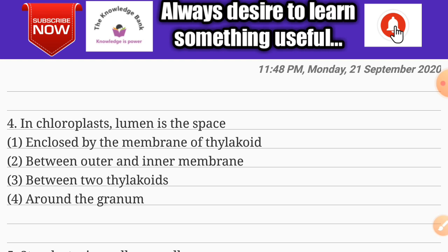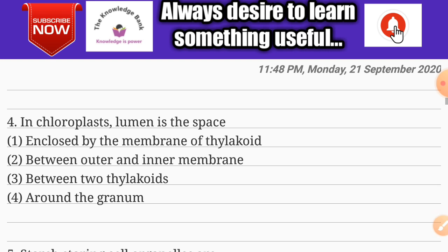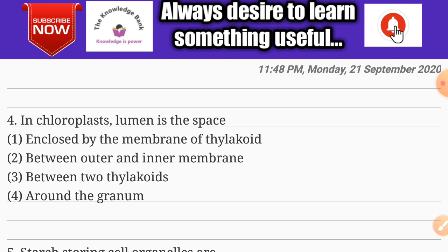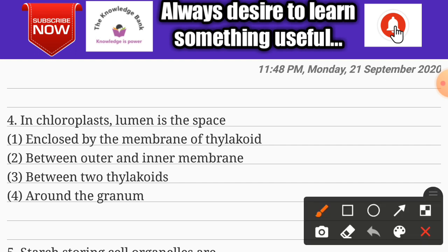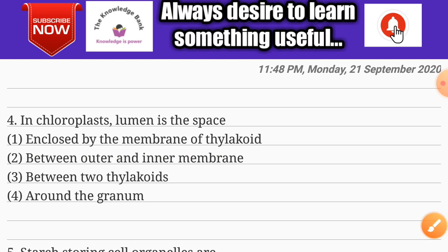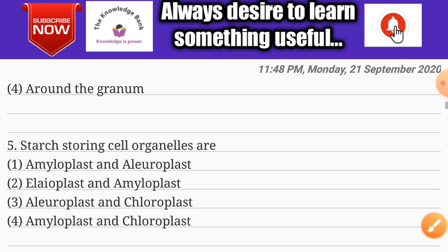Question number four: in chloroplast, lumen is the space — options are: enclosed by the membranes of thylakoid, between outer and inner membranes, between two thylakoids, and around the granum. The correct answer is option one: enclosed by the membranes of thylakoid.